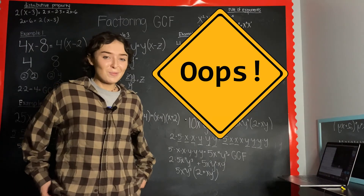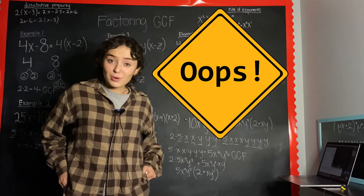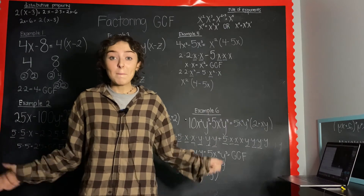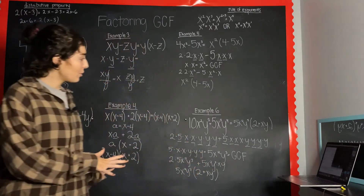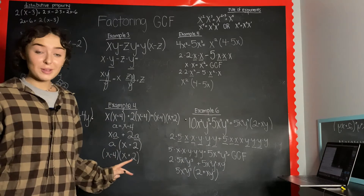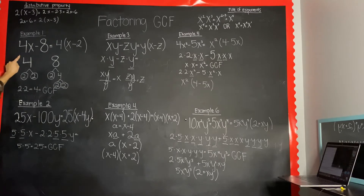Midway through filming my phone ran out of storage and all the footage got deleted, but I'm just going to go through everything that I wrote and hopefully you won't have a problem following along. We're given the expression 4x minus 8, and the first thing you want to do is look for the greatest common factor between 4x and 8.